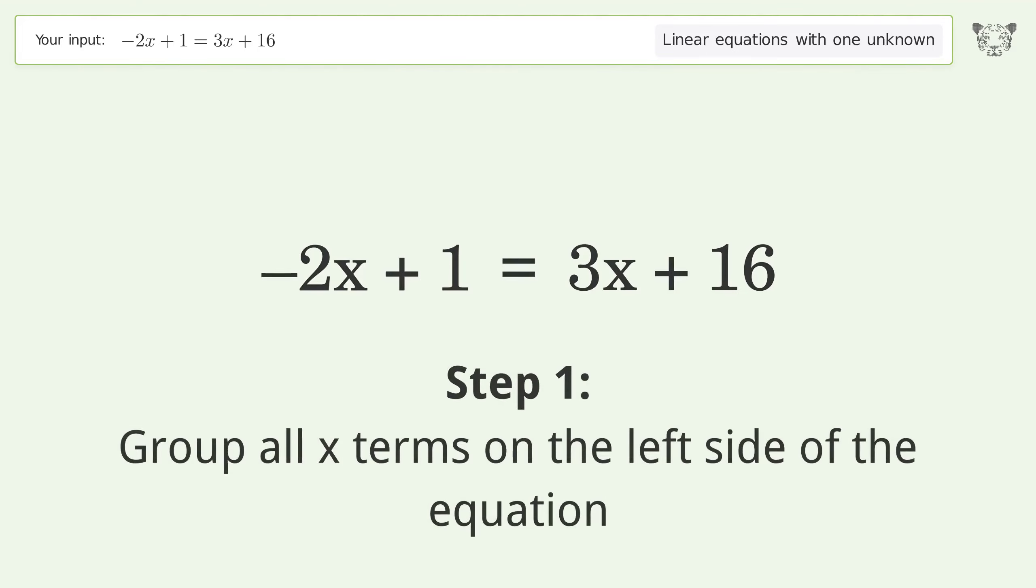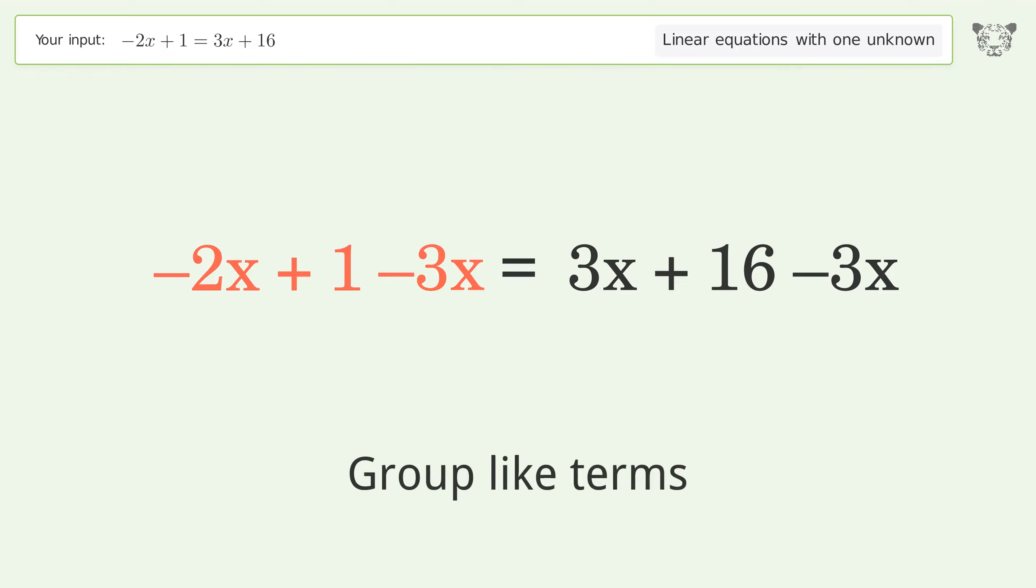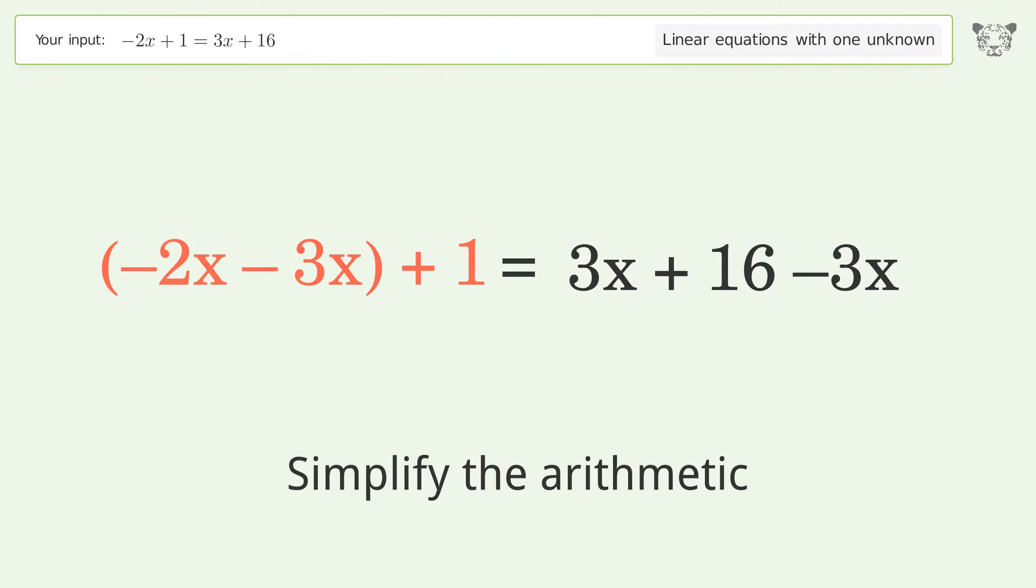Group all x terms on the left side of the equation. Subtract 3x from both sides. Group like terms. Simplify the arithmetic.